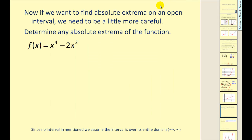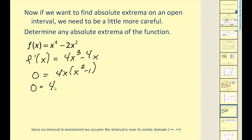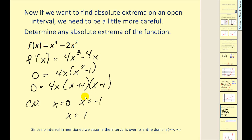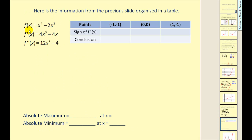Let's try one more on an open interval. If we want to find the absolute extremum on an open interval, we need to be a little more careful. We'll start by finding the critical numbers — set the derivative equal to zero and factor. We have three critical numbers: x equals zero, x equals negative one, and x equals one. Since the interval for this function is all real numbers, we obviously cannot test any end points, so we're going to go back to the second derivative test. We determine if we have relative extrema and then from that determine if we have absolute extrema. We sub these x values back into the original function and find these three points.